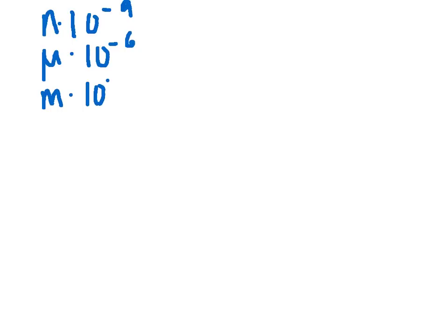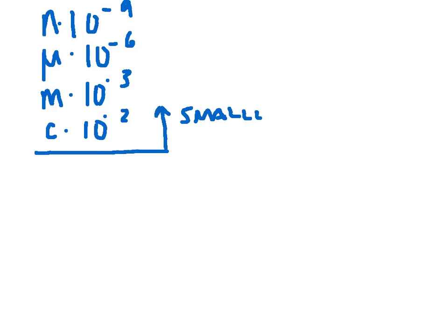We're going to begin by talking about unit conversion. The important things to keep in mind are our metric prefixes. We're going to have nano, which is 10 to the negative 9th; micro, which is 10 to the negative 6th; milli, which is 10 to the negative 3rd; and centi, which is 10 to the negative 2. Those are the things that are smaller than a meter, smaller than our base unit.